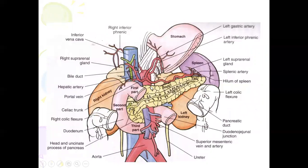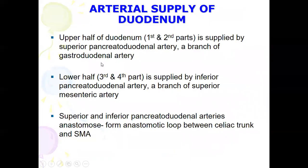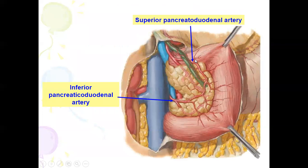To summarize the four parts of the duodenum: the artery supply of the upper half — first and second parts — is by the superior pancreaticoduodenal artery, a branch of the gastroduodenal artery. The lower half — third and fourth parts — is supplied by the inferior pancreaticoduodenal artery, a branch of the superior mesenteric artery.